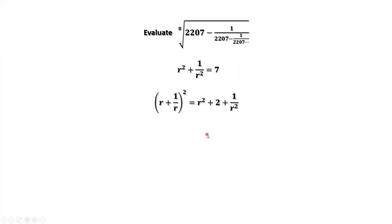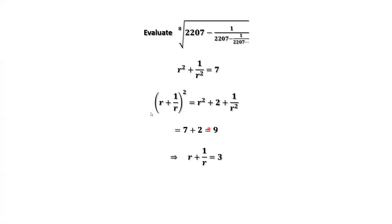Repeat the same procedure again. r plus 1 over r, then squared, equals r squared plus 2 plus 1 over r squared, which is 7 plus 2 equals 9. 9 is 3 squared. Therefore, r plus 1 over r equals 3.